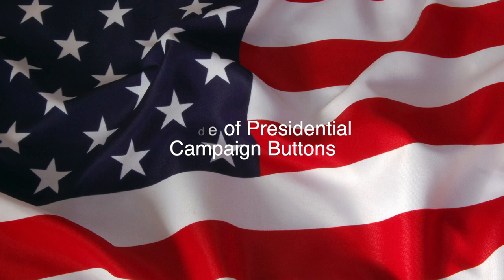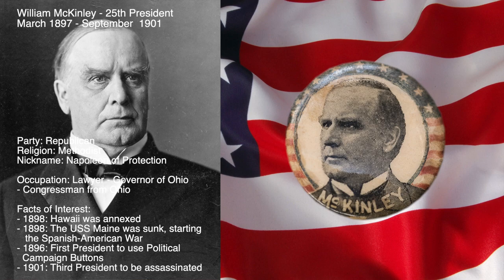William McKinley was the 25th President of the United States. He served from March 1897 until September of 1901. He was a Republican and a Methodist. His nickname was Napoleon of Protection. His previous occupation was lawyer, governor of Ohio, and congressman from Ohio.